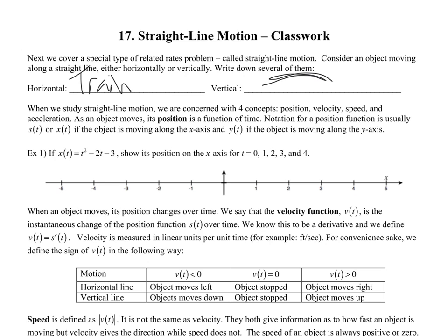For this first example, here's a function that gives us the position along the X axis using X of T notation. We're going to evaluate it for T equals 0, 1, 2, 3, and 4. X of 0: substitute 0 in for all the T's and you get 3. At time 0, it starts at 3.